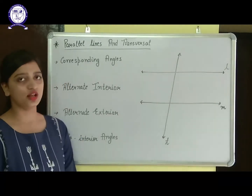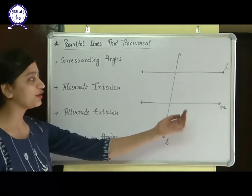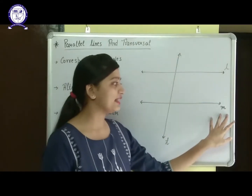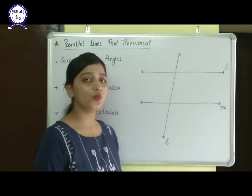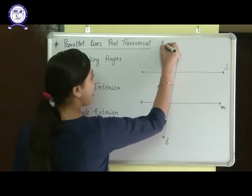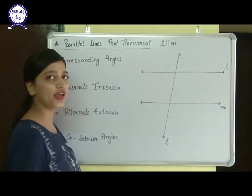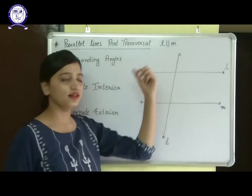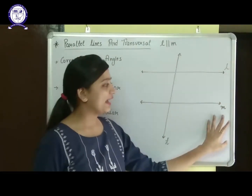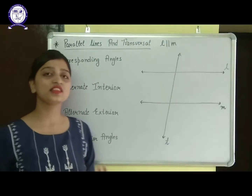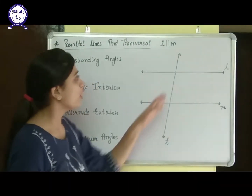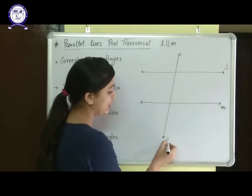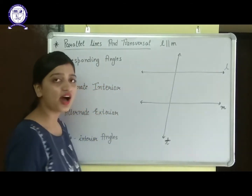Second is transversal. What is a transversal? Suppose there are two lines parallel to each other — line L and line M. They are parallel to each other, written as L ∥ M. These two vertical lines are the symbol of parallel. Now there is a third line T which cuts both of them — this is the transversal.